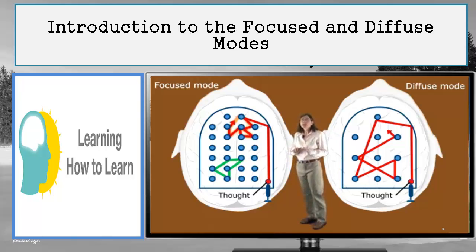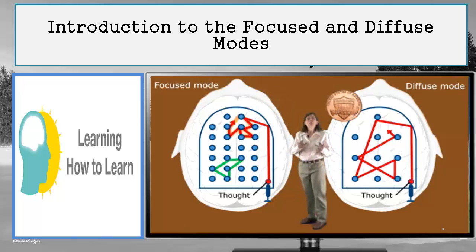Now, as far as neuroscientists know right now, you're either in the focus mode or the diffuse mode of thinking. It seems you can't be in both thinking modes at the same time. It's kind of like a coin. You can see either one side or the other side of the coin, but not both sides at the same time. Being in one mode seems to limit your access to the other mode's way of thinking.